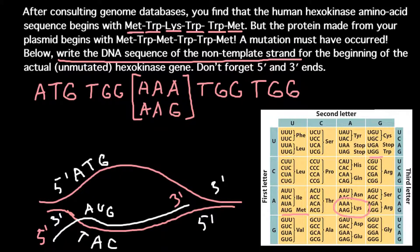The last amino acid is methionine, which is A, T, G. Let us return to the problem. The protein made from your plasmid begins with methionine, tryptophan, methionine. So methionine, tryptophan, methionine — and as you see, there is a mutation at the third position. The rest are the same: tryptophan, tryptophan, methionine. So the third position changed from lysine to methionine.